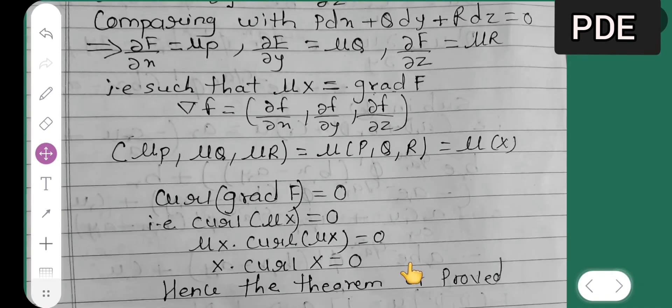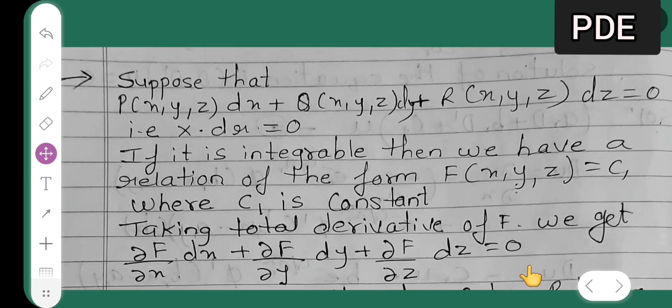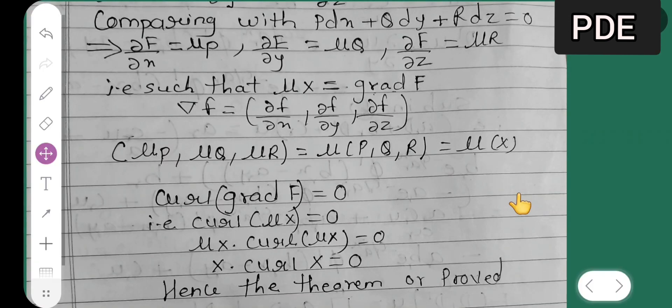So with this, we are done with today's theorem. In the next lecture, I will be doing one more theorem. We got X·curl(X) = 0 over here. I hope you all have understood today's lecture and thanks for watching.